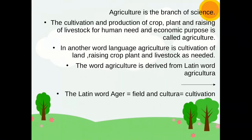Agriculture is a branch of science. The cultivation and production of crop, plant, and raising of livestock for human need and economic purpose is called agriculture. In another word, agriculture is the cultivation of land, raising crop, plant, and livestock as needed. Agriculture is derived from Latin: 'ager' means field and 'cultura' means cultivation.